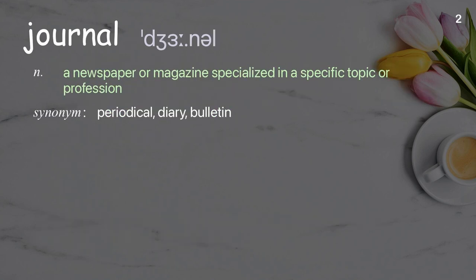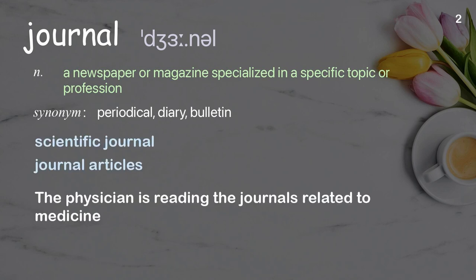Journal: a newspaper or magazine specialized in a specific topic or profession. Examples: scientific journal, journal articles. The physician is reading the journals related to medicine.